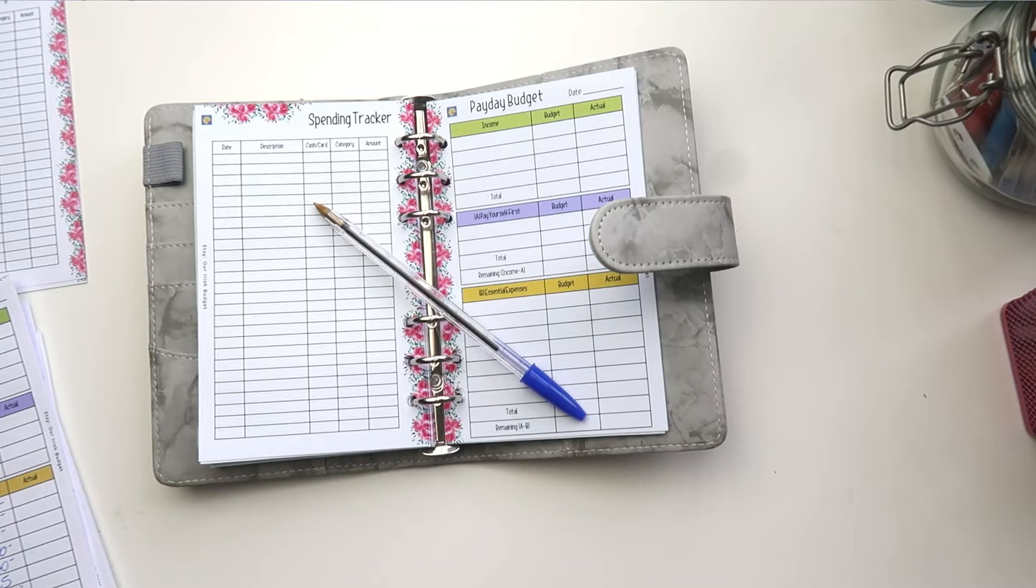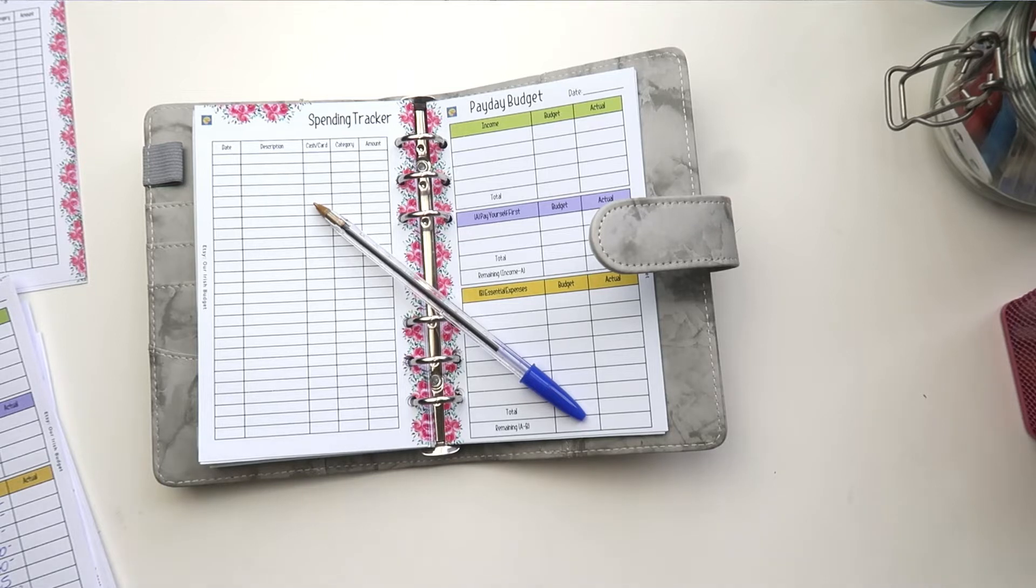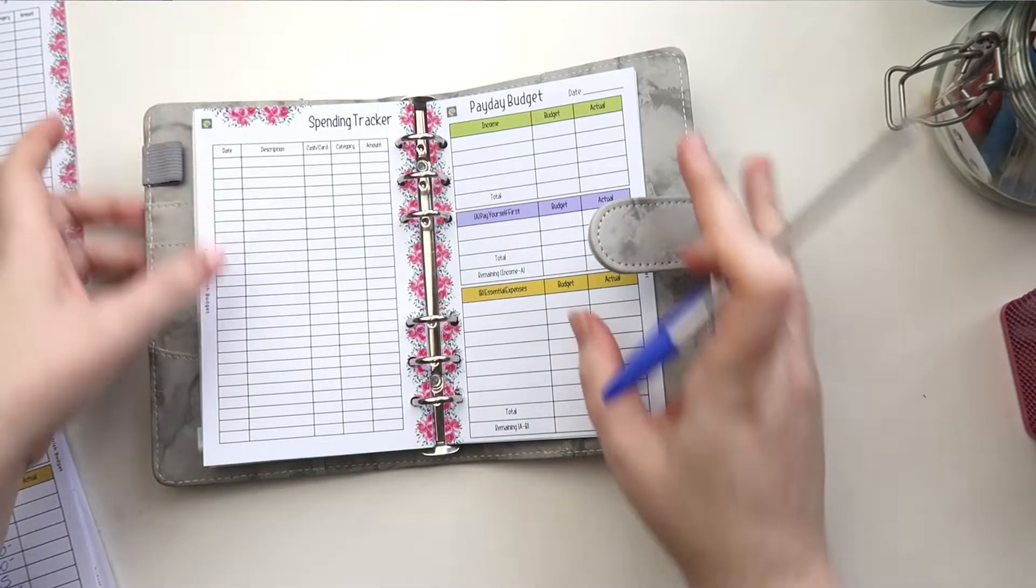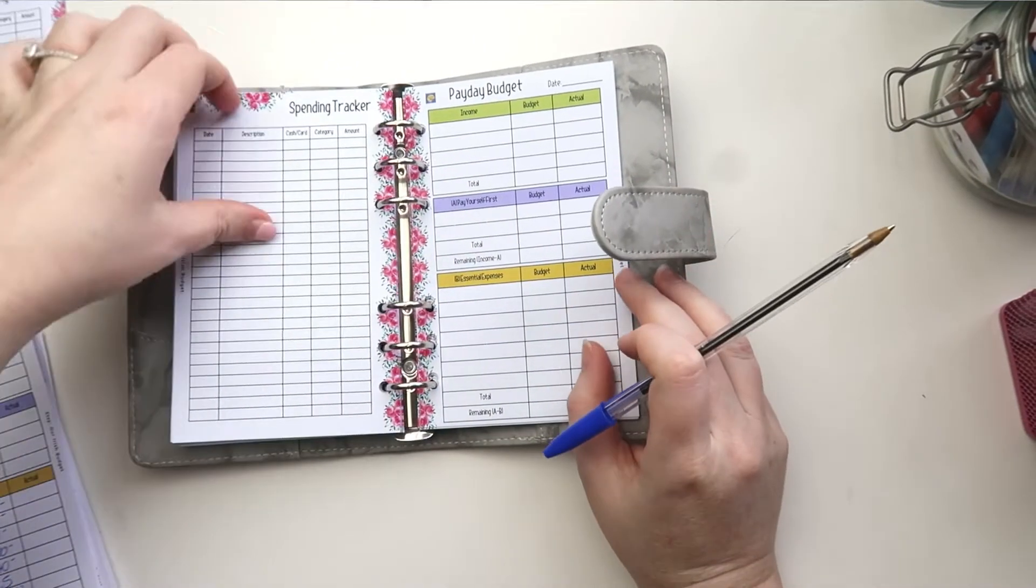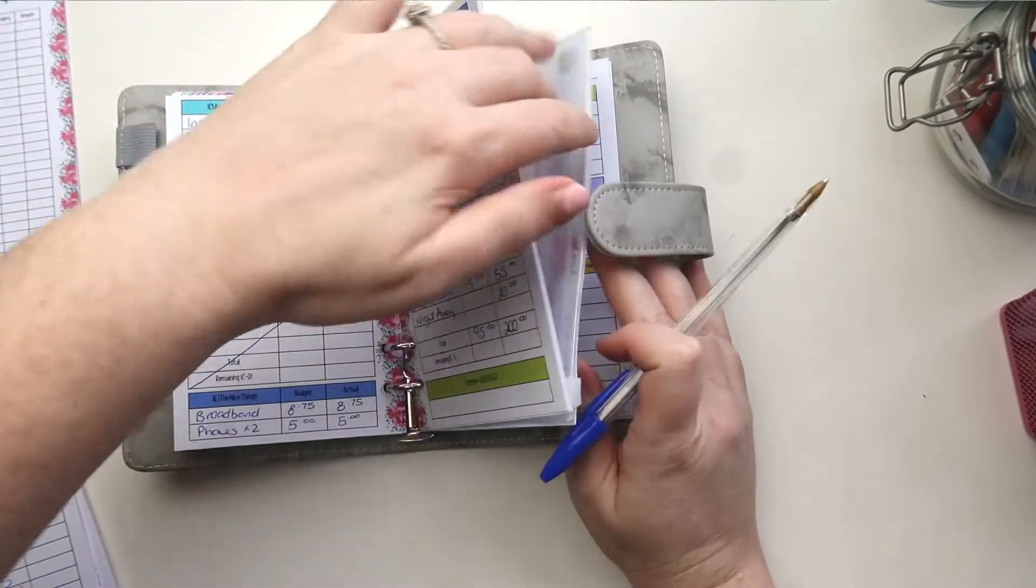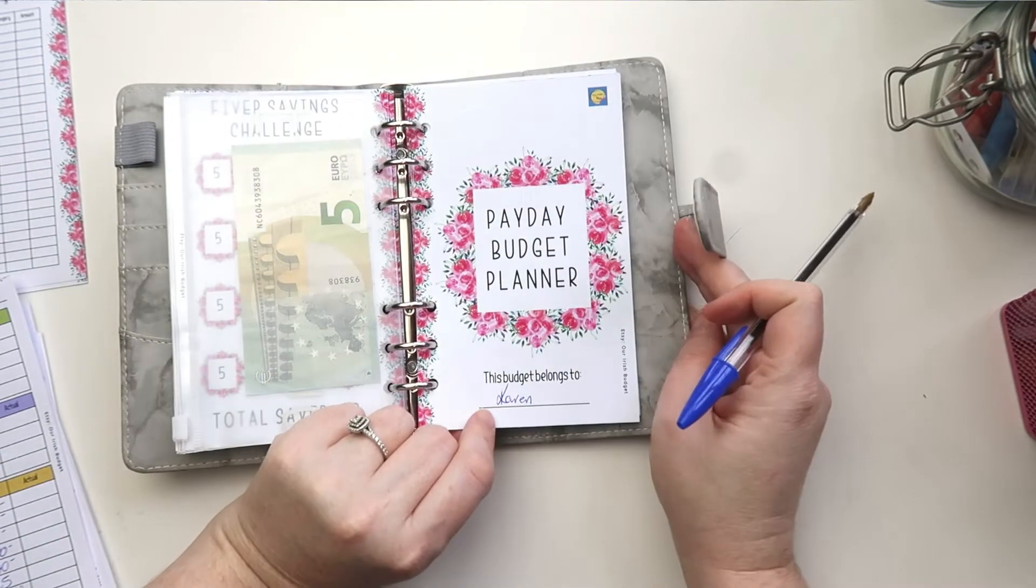Which is not ideal, but yeah, so this is what's going to be shown in this payday budget video. All of the products you see in this video you can purchase from my Etsy shop if you're interested. So without further ado, this is my grey marble binder. I have these in a range of different colours and inside it here I have my payday budget planner.